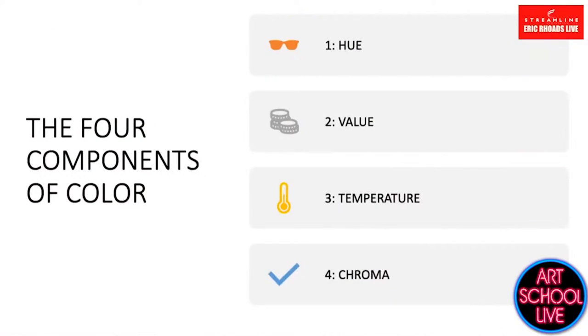I'll talk first about how I approach color — color mixing — and then atmospheric perspective, and then give you some tips for painting clouds. When I think about color, I consider four components: hue, value, temperature, and chroma. That's the hierarchy I use when mixing color. I first consider the hue, then the value, then the temperature, and then the chroma.